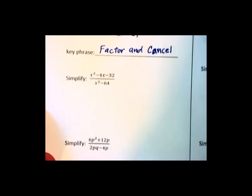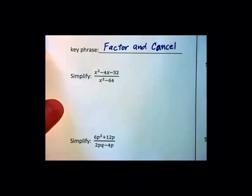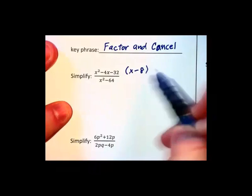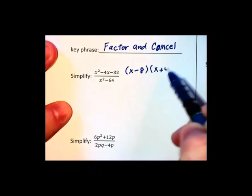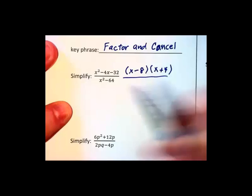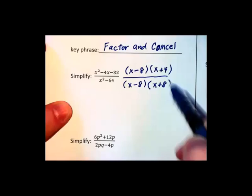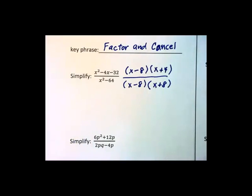I want to emphasize that word multiplication. On this next problem here, as we go to factor the numerator, x-8 times x+4, and factor that denominator, x-8 times x+8, notice how after factoring we have a multiplication problem. That's always true for factoring.